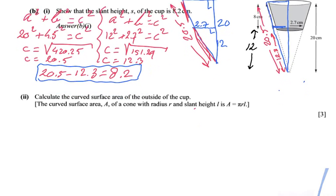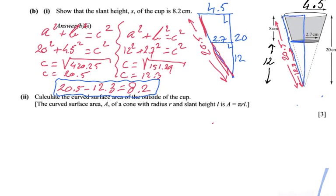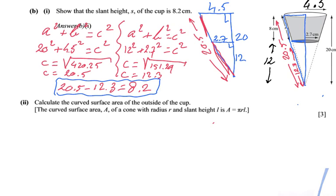So we move on now to the next question. The next question says the following: Calculate the curved surface area of the outside of the cup. And they say the curved surface area A of a cone with a radius R and a slant height L is A equals pi RL. By the way guys, this is a five point question, so don't expect to answer this in one minute. That's going to take some time.